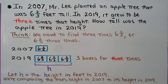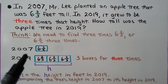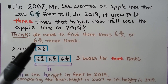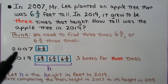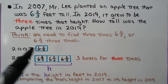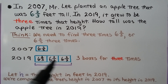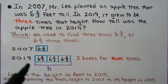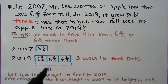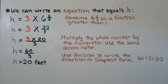In 2007, Mr. Lee planted an apple tree that was 6 and 2 thirds feet tall. In 2019, it grew to be 3 times that height. How tall was the apple tree in 2019? We need to find 3 times 6 and 2 thirds. We use a bar model showing 6 and 2 thirds feet for 2007, and 3 boxes for 3 times in 2019. Those 3 boxes equal the height in feet in 2019, and we're comparing the tree's height in 2007 to its height in 2019. We write an equation: h equals the height in feet.